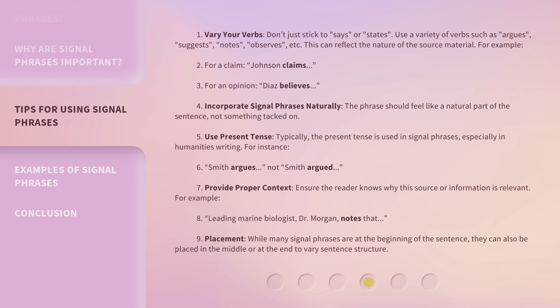Third, use present tense. Typically, the present tense is used in signal phrases, especially in humanities writing. For instance, write 'Smith argues,' not 'Smith argued.' Fourth, provide proper context — ensure the reader knows why this source or information is relevant. For example, 'leading marine biologist Dr. Morgan notes that...' Fifth, consider placement: while many signal phrases are at the beginning of the sentence, they can also be placed in the middle or at the end to vary sentence structure.